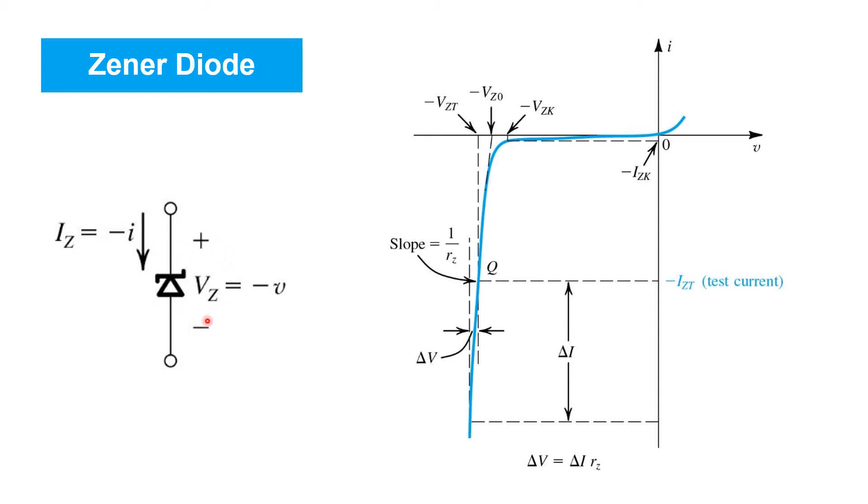You'll see that the polarity through which zener current flows actually corresponds to negative current according to our normal polarity definitions for diodes. Likewise, zener voltages correspond to negative or reverse bias voltages in our normal diode IV characteristics. So shown here is the IV characteristic of a diode, zooming in on the reverse breakdown portion of the plot.